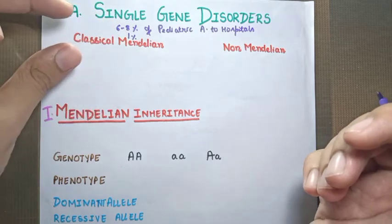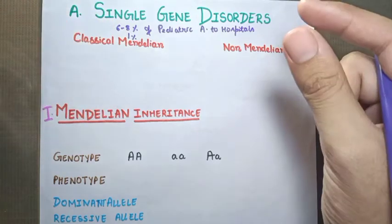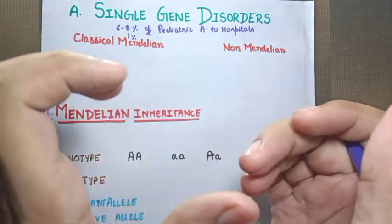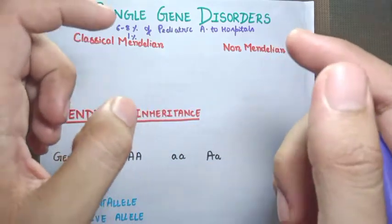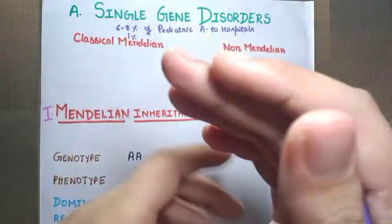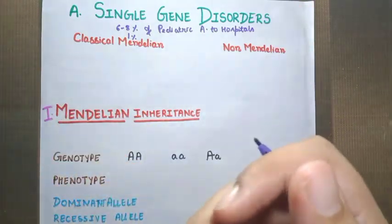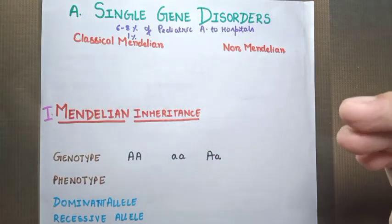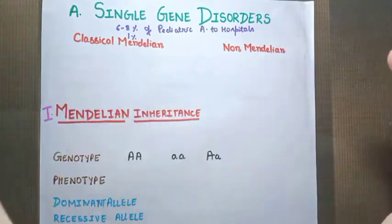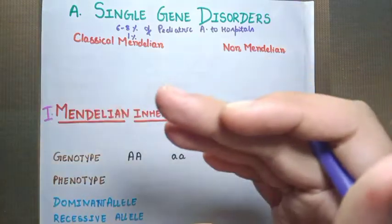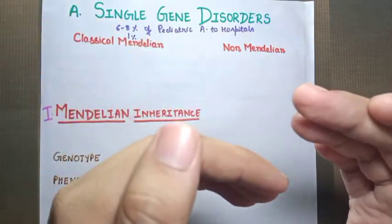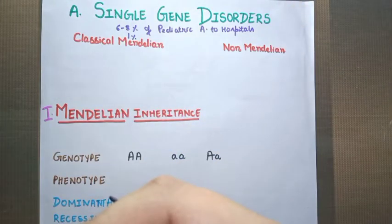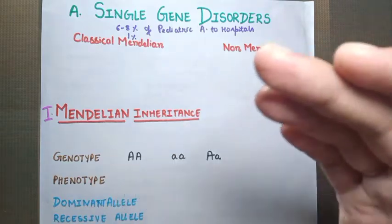We divide single gene disorders into two categories. The first category is called the classical Mendelian modes of inheritance and the second is called the non-Mendelian modes of inheritance. First, let's start with the classical Mendelian inheritance. What do you understand by the word gene? A gene is a part of the DNA which can express itself. DNA is made up of a number of base pairs. The minimum amount of base pairs that can express itself, forming mRNA which codes for proteins, is called a gene.